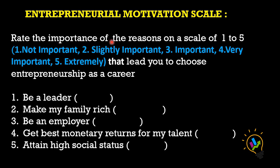He is asking the respondent to rate the importance of each reason on a scale of one to five, where one is not important and five is extremely important, as reasons leading them to choose entrepreneurship as a career. The respondent must read each statement and rate it from one to five. This is a Likert scale. What is important to understand here is that each statement is separately rated — the first statement is not compared to the second statement.